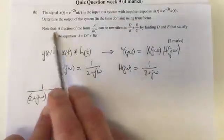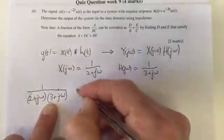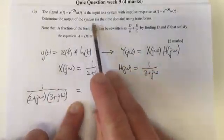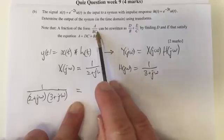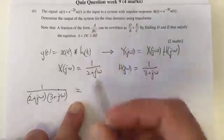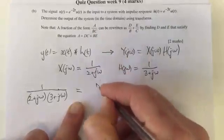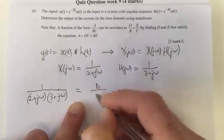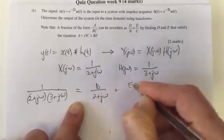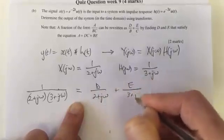And there's a hint, there's a note in the question which helps you with this. You can separate functions of this form where there's two different terms on the denominator. You can separate them out into two different terms by using this approach. And so that's what we'll do here.